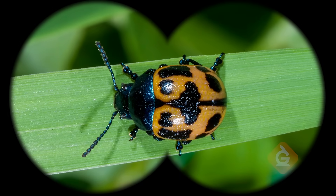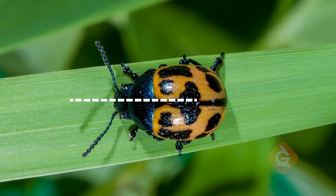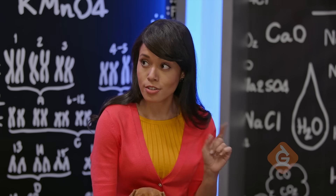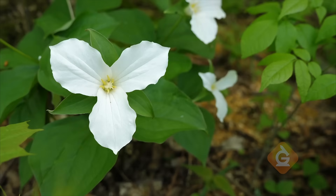Look how this beetle has symmetry. The shape of its body, its legs, and antennas are exactly the same on the opposite side of the line.